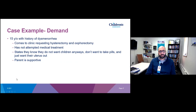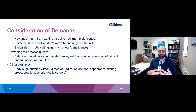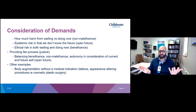A case example of demand: suppose you have a 15-year-old with a history of dysmenorrhea who comes to the clinic requesting a hysterectomy and oophorectomy. They have not attempted medical treatment, state they know they don't want children anyway, don't want to take pills, and just want their uterus out. The parent is supportive. A pretty unlikely scenario, but useful for the thought experiment. We have to consider these demands similarly — how much harm from waiting versus doing now, the epistemic risk that we don't know the future, and the ethical risk in both waiting and doing. We don't really know that she doesn't want kids in the future. We currently know she doesn't want kids, but we have an ethical risk: if we do it now, we can't put the uterus back in.